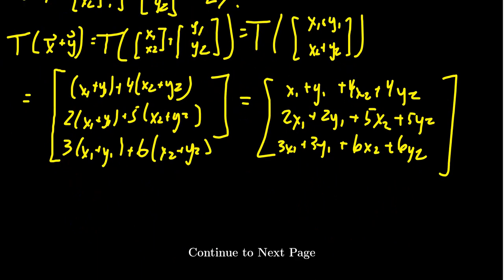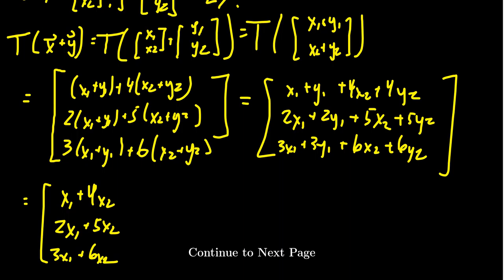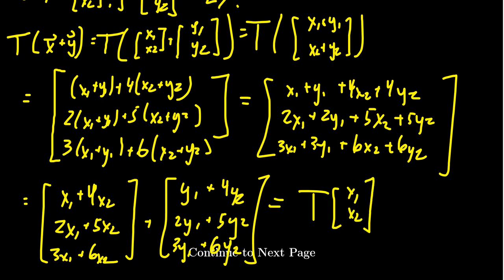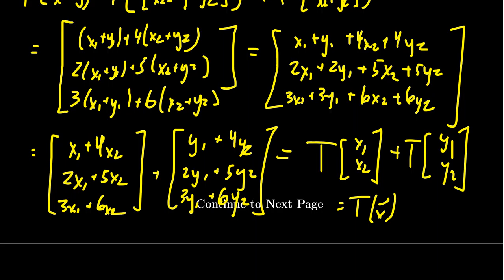I'm then going to group the common X's and Y's. Notice we can break this thing up by writing all of the X terms in a single vector: X1 plus 4X2, 2X1 plus 5X2, and 3X1 plus 6X2. Then doing the same for Y: Y1 plus 4Y2, 2Y1 plus 5Y2, and 3Y1 plus 6Y2. The first vector is just T of X1, X2, and the second is just T of Y1, Y2.